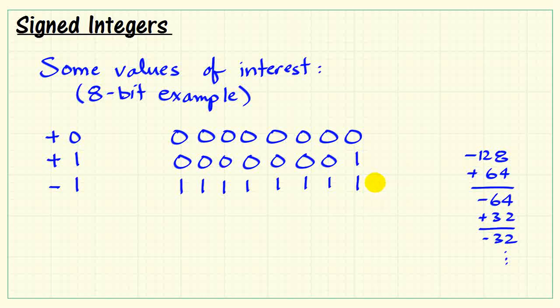We have minus 128 plus all of the other activated weights, and that gives us negative 1. Interestingly, negative 1 always looks like all bits are 1, regardless of the length of the binary pattern.